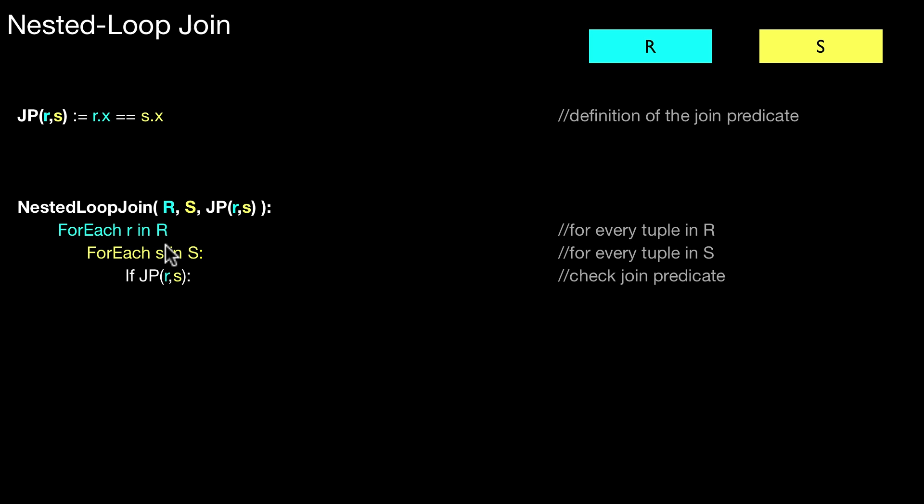And within this nested loop, the algorithm simply calls the join predicate. So it checks whether that join predicate holds. And if that is the case, it returns an output. That is the output that is returned. So tuple R and S somehow combined. This is written to the output.